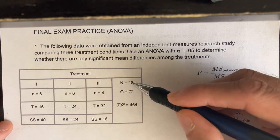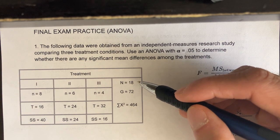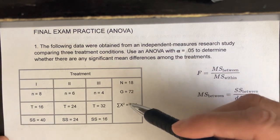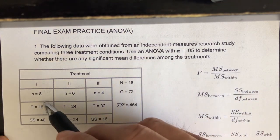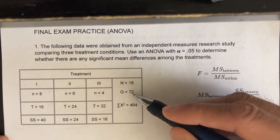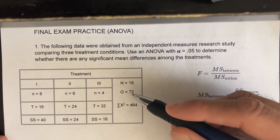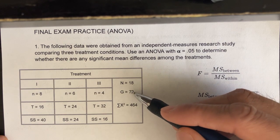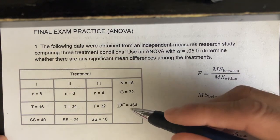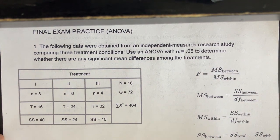On the right column I see N equals 18, which is the total number of scores — equivalent to adding up all the individual group n's to get big N. Big G is the sum of all scores, found by summing up the group totals. The sum of X-squared is also given to us.